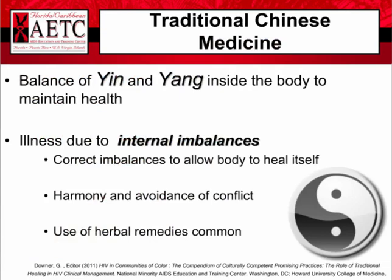Next let's talk about Chinese traditional medicine or TCM. This has been practiced in Asia for more than 5,000 years. Key components include the concept of body balance and yin and yang to maintain health. Illness is thought to be due to internal imbalances; the goal is to correct imbalances to allow the body to heal itself. Herbal stores are often found in Asian communities and people who work in these stores are often experts in herbal medicine and other healing methods including acupuncture. Harmony and avoidance of conflict are hallmarks of Asian culture. Asian patients are often stoic about pain and may not vocalize when they are in pain. In some cultures it's not considered polite for patients to ask questions of physicians, so a patient may nod their head even if they don't understand.